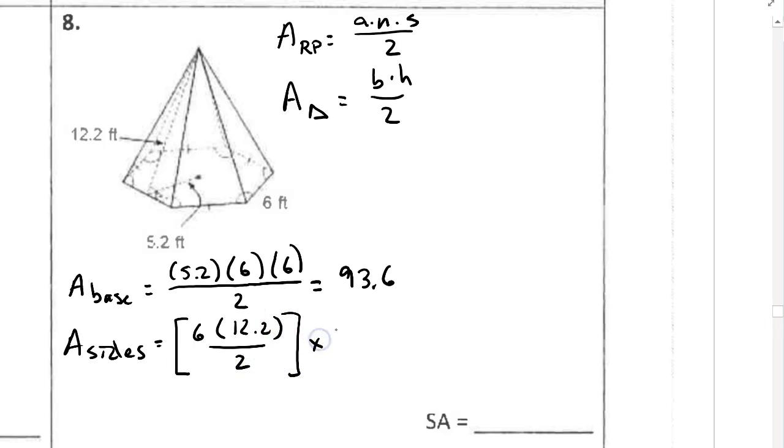And again, we have 6 of those. So I'll multiply by 6. And that should come out to 219.9.